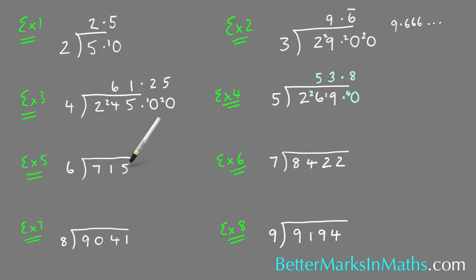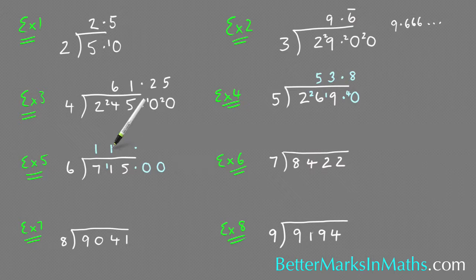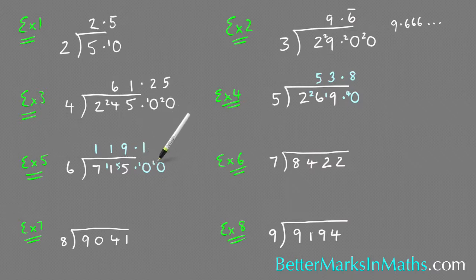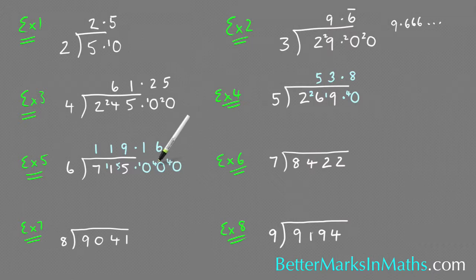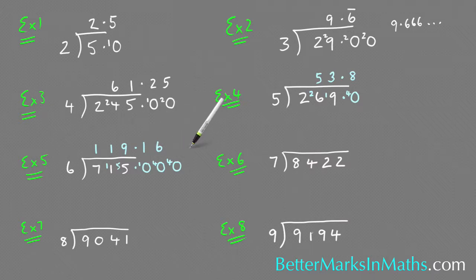Example five: how many sixes in 715? I'm going to set up a couple of zeros and the point. How many sixes in seven? There's one with one left over. How many sixes in 11? There's one with five left over. How many sixes in 55? Nine sixes are 54, so there's nine with one left over. How many sixes in 10? There's one with four left over. How many sixes in 40? There's six — six sixes are 36, so there's four left over again. It's a repeating pattern, so the sixes keep repeating. The exact answer is 119.16 recurring.